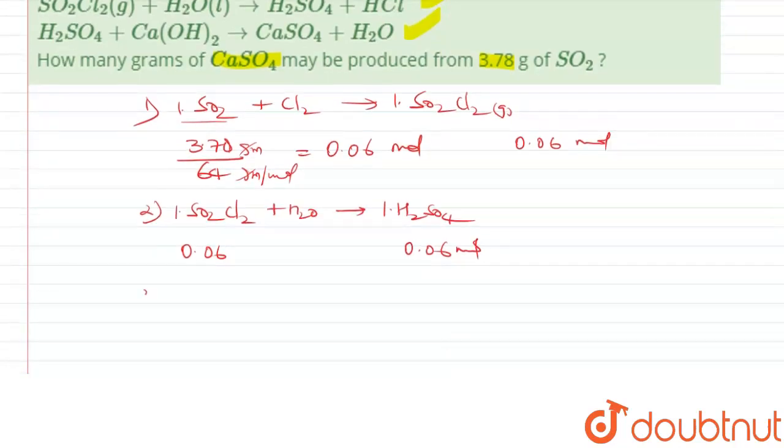H2SO4 reacting with something and it is producing CaSO4. If this is 0.06 mole, then it will be what? 0.06 mole. Okay?